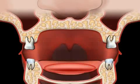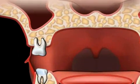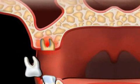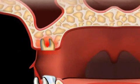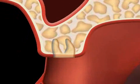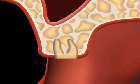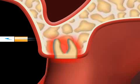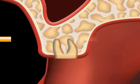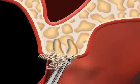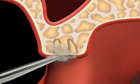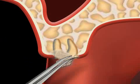Alveolitis refers to an inflammation of the bone base after the extraction of a tooth. This complication after an extraction often occurs in the side teeth of the lower jaw of smokers. But if a dentist fails to treat a wound properly, this can also lead to a case of alveolitis.